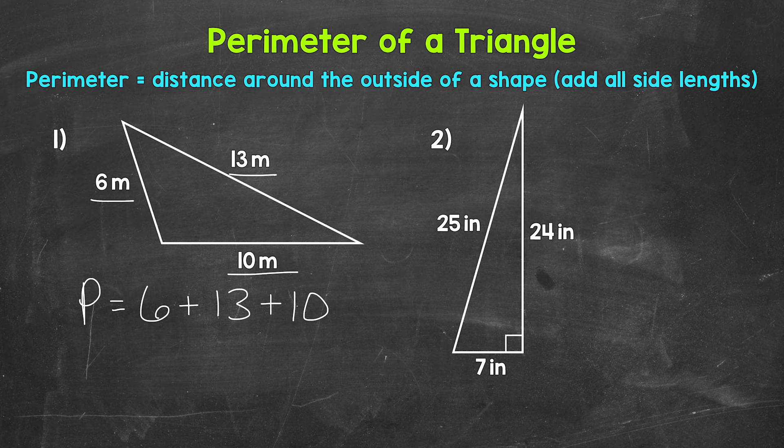Now it does not matter what order you add those sides in. You'll get the correct perimeter however you do it. So something to keep in mind. So now let's add. We have 6 plus 13, which is 19, plus 10 is 29. So the perimeter is 29 meters.